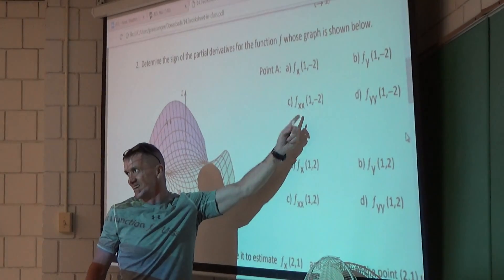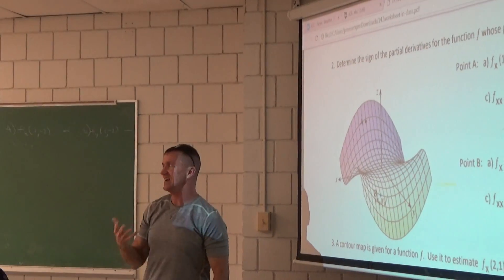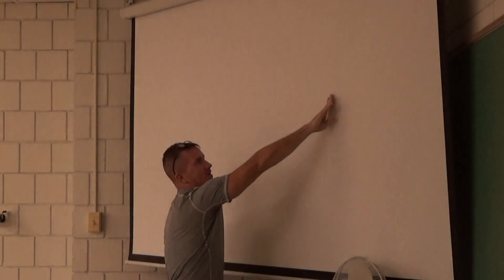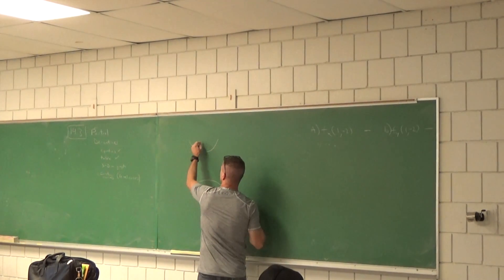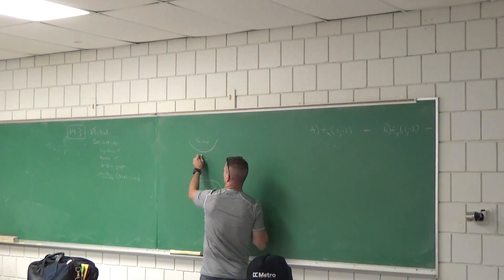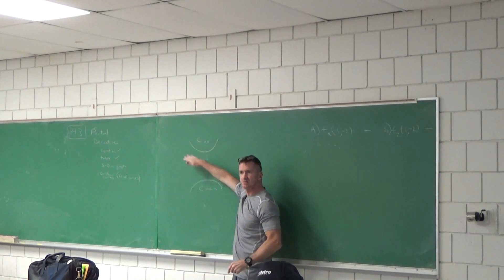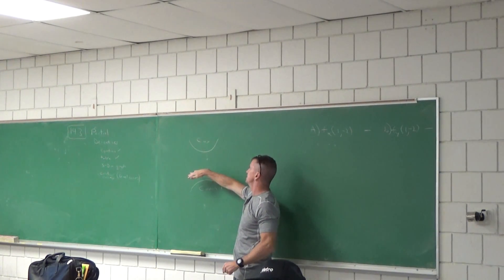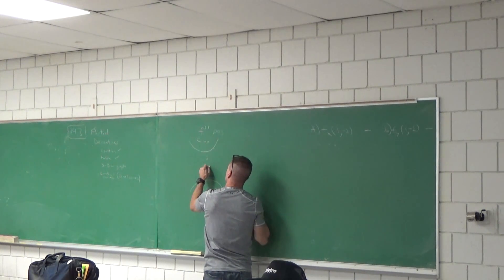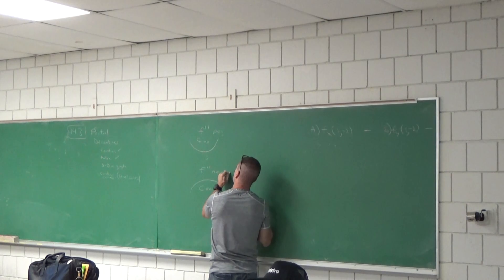Now, what about the second derivative with respect to x? We have to think about concavity as we move in the direction of the positive x-axis. When a function is concave up, it's like a cup — the slope of f always increases along that interval. Concave down means the first derivative of f is always decreasing.